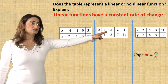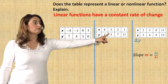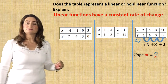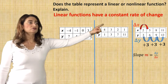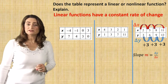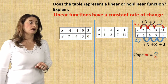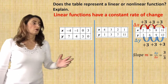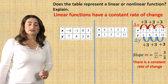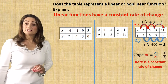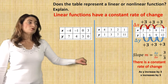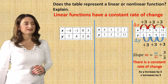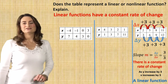Let's see the first table. The change in y is from 3 to 6 to 9 to 12 — that is an increase of 3. The slope is 3 over 3. There is a constant rate of change because it's the same between any two points. As y increased by 3, x also increased by 3. So it is a linear function.